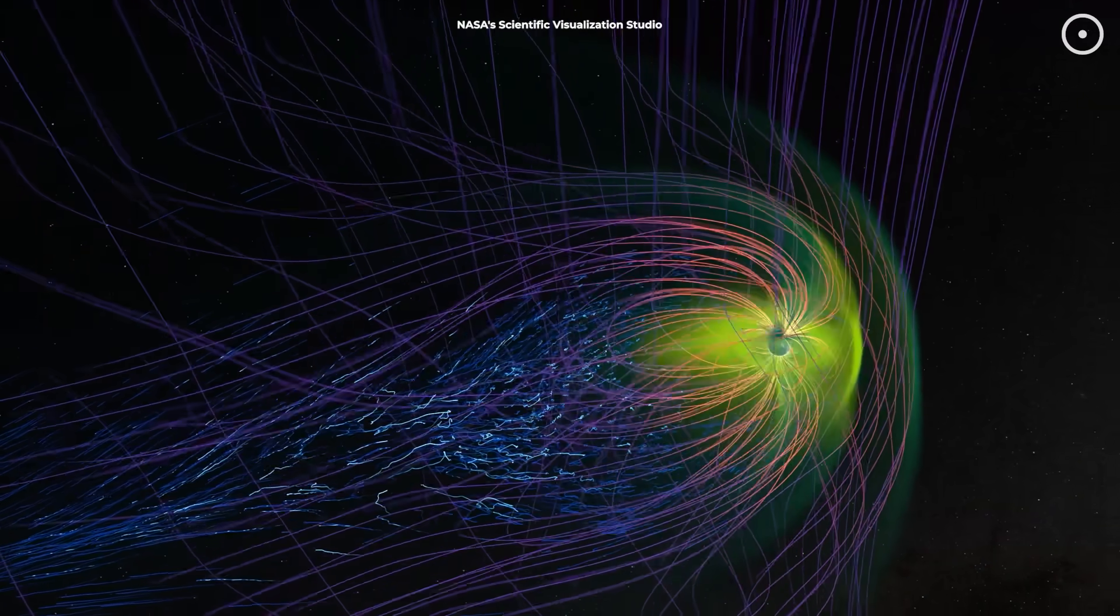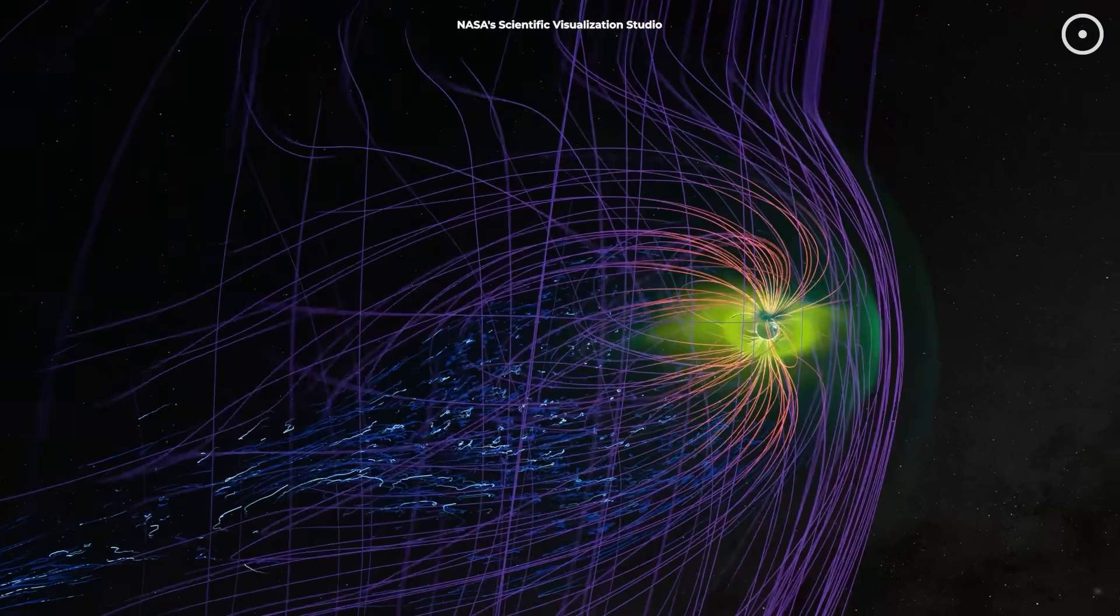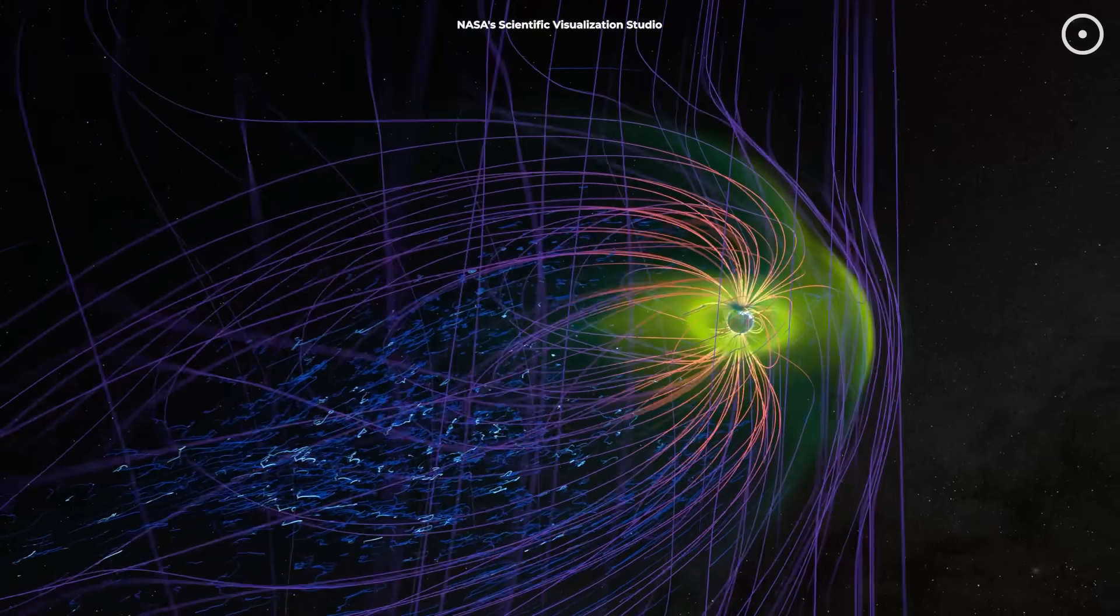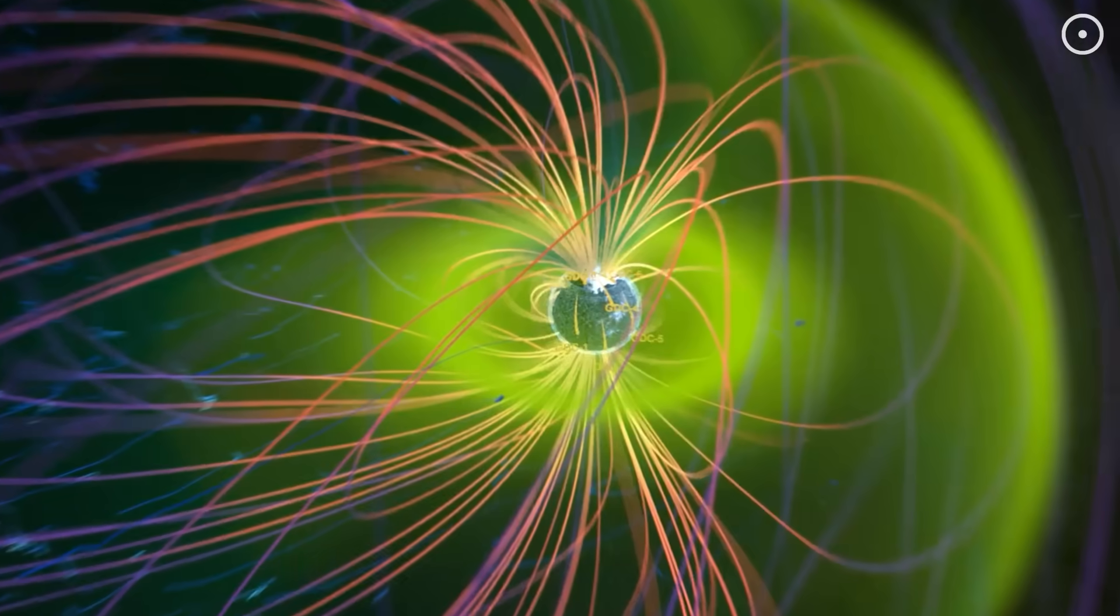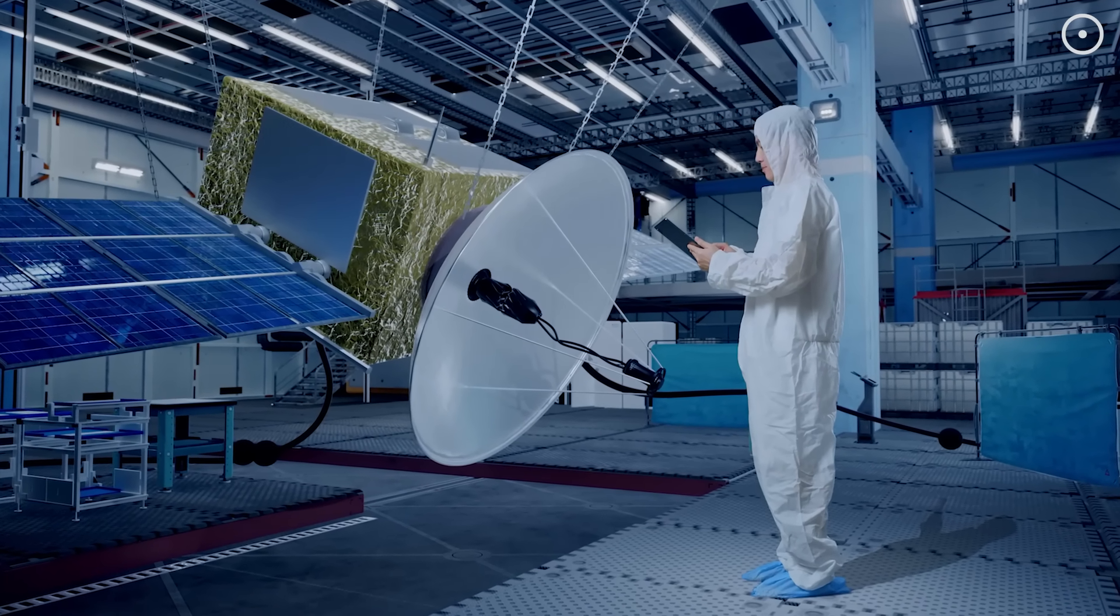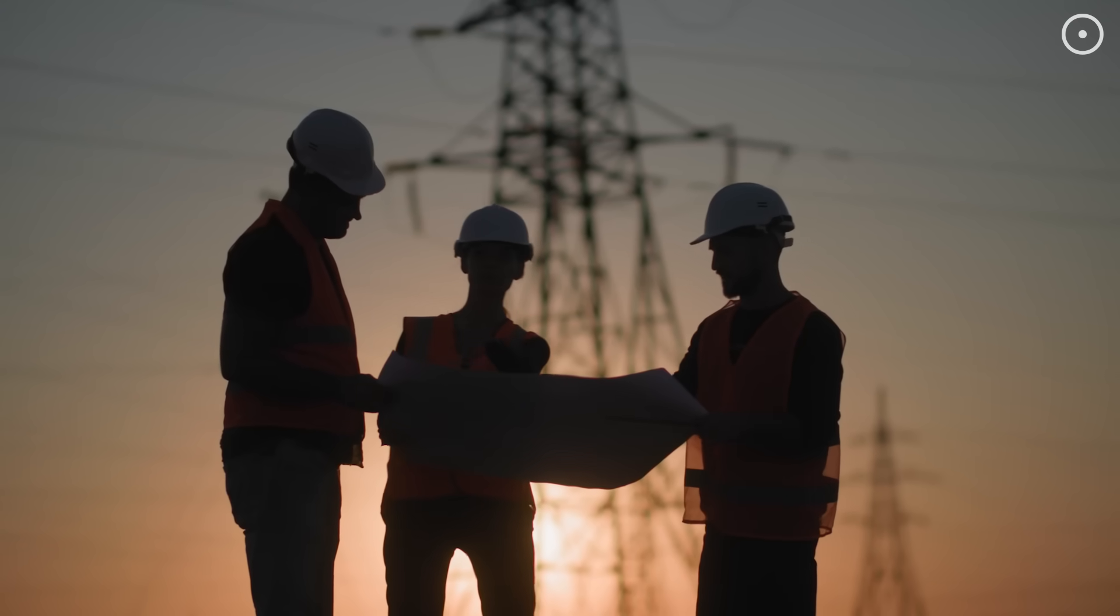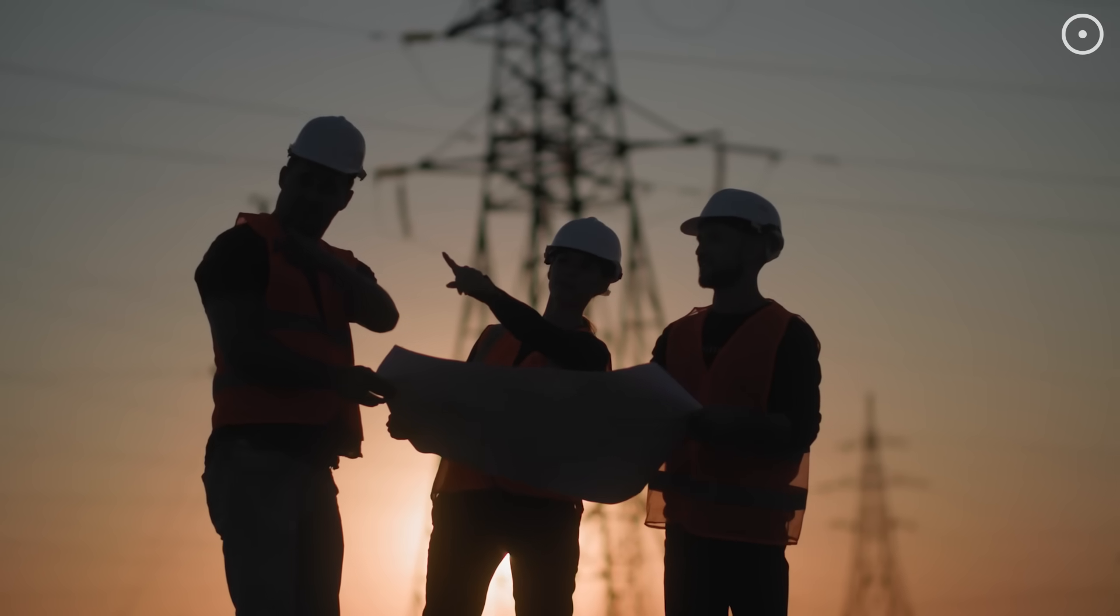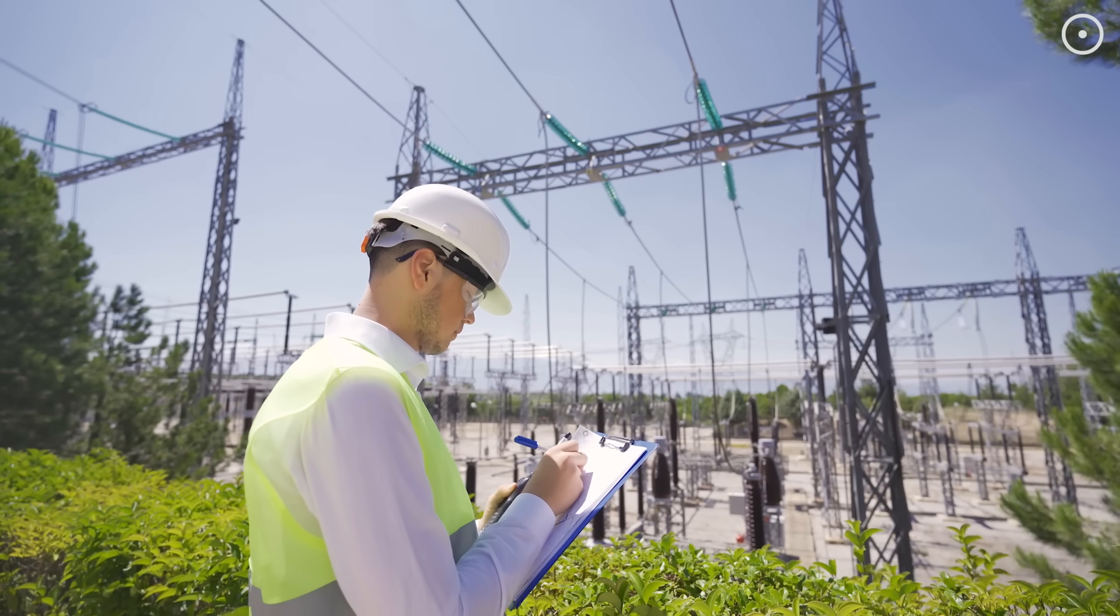Scientists estimate that at the current state of decay, it might take several centuries or even a millennium before we reach a critical point. This gives us time to prepare our technology and infrastructure. Space agencies are already developing better radiation shielding for satellites and spacecraft. Power grid operators are installing equipment to protect against geomagnetic storms, which could become more common as the field weakens.